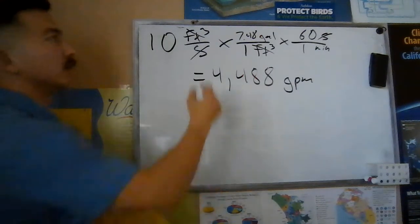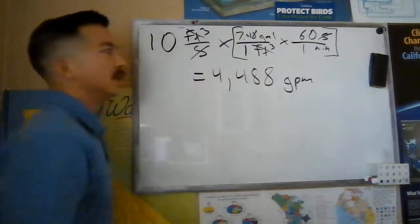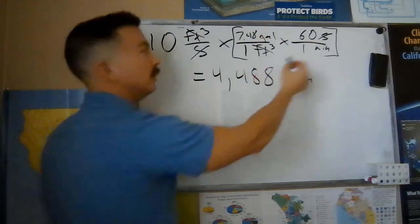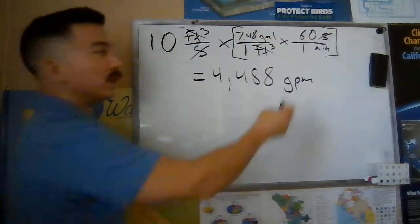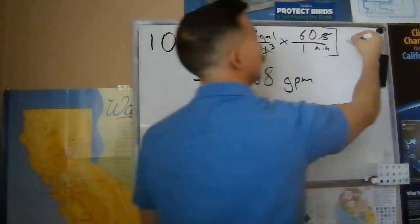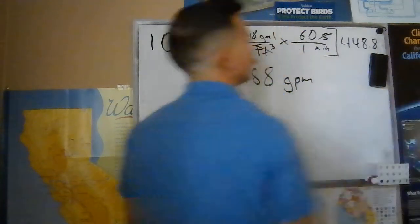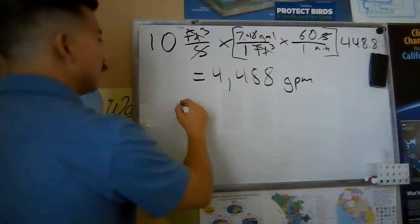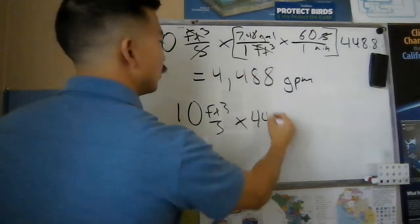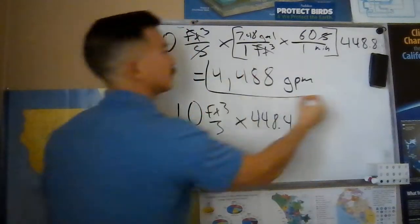Now I want to point out the shortcut here in that this part of the conversion factor here is always going to be the same. We're always going to use 7.48 gallons per cubic foot, 60 seconds per minute. So when we come in here and multiply 7.48 times 60, just the brackets here, we're going to get 448.8. So that is a shortcut you can use. So for this problem, we could just do 10 cubic feet per second times 448.8. And that's going to get us to our same answer here.